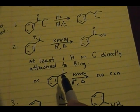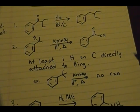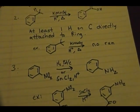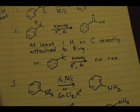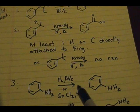If you have no hydrogens on the carbon directly attached to the aromatic ring, no reaction. The third one is if you have a nitro group present on the aromatic ring, you could use H2, palladium carbon catalyst, which will give you your NH2.